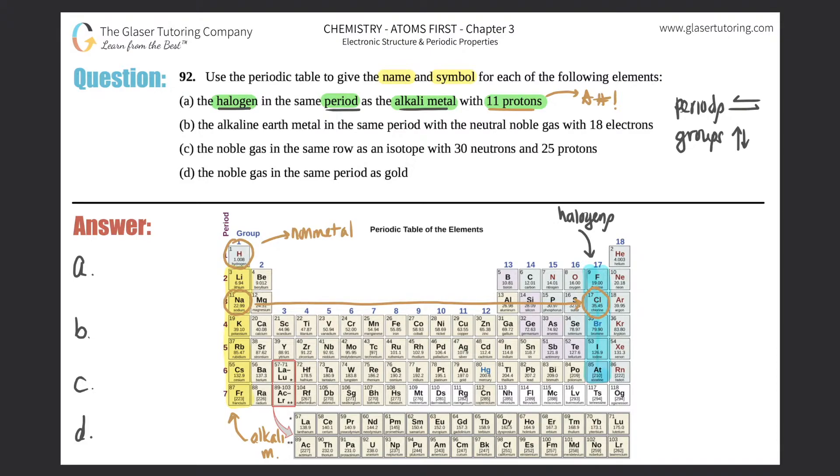So they want the name and symbol. For part a, it would be chlorine, C-H-L-O-R-I-N-E, and Cl would be the symbol. That's the answer to the first part.